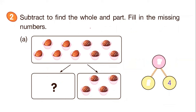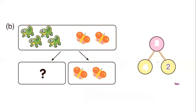For number two, subtract to find the whole and part — fill in the missing numbers. How many pictures do we have? One, two, three, four, five, six, seven, eight, and nine — so we have nine. This side we have four: one, two, three, four. So the other part is five — five and four make nine. Write your answer for part b. I believe you have all understood the meaning of subtraction — let us stop here for today. Good break!